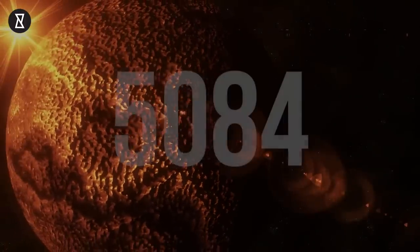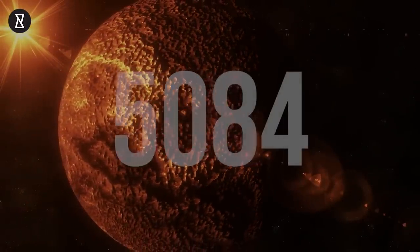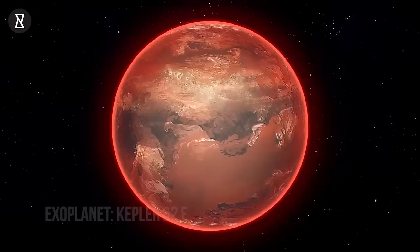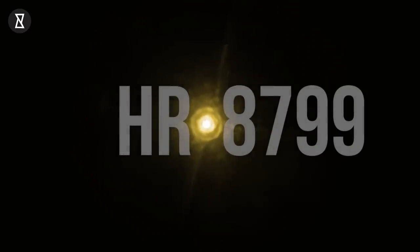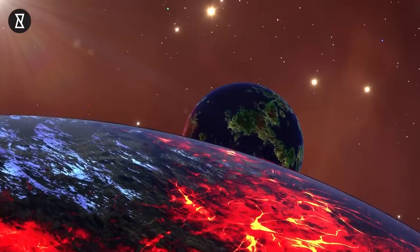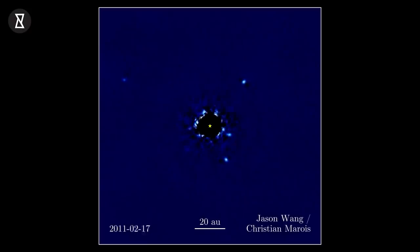Currently, the number of known exoplanets is 5,084, and the number has been growing steadily. Of all those alien worlds, only a handful have been seen directly. The poster child for such systems is HR 8799, whose four giant planets have been imaged so frequently that astronomers have produced a movie showing them moving in their orbits around their host star.